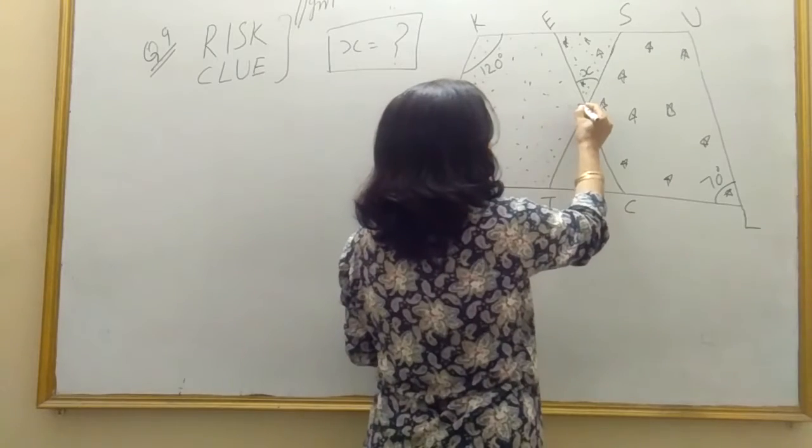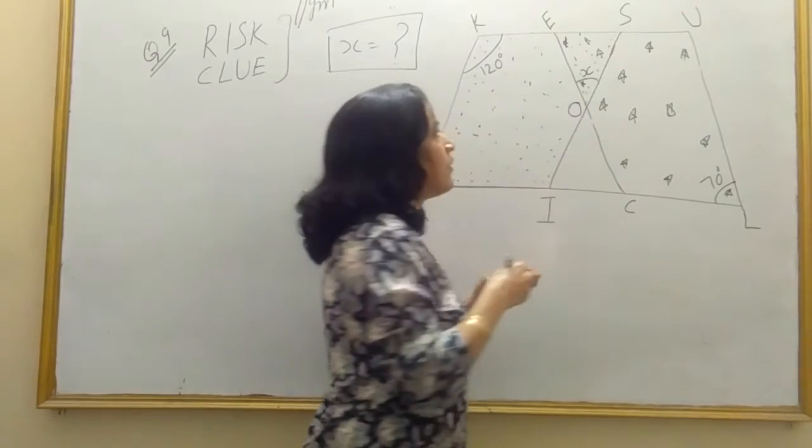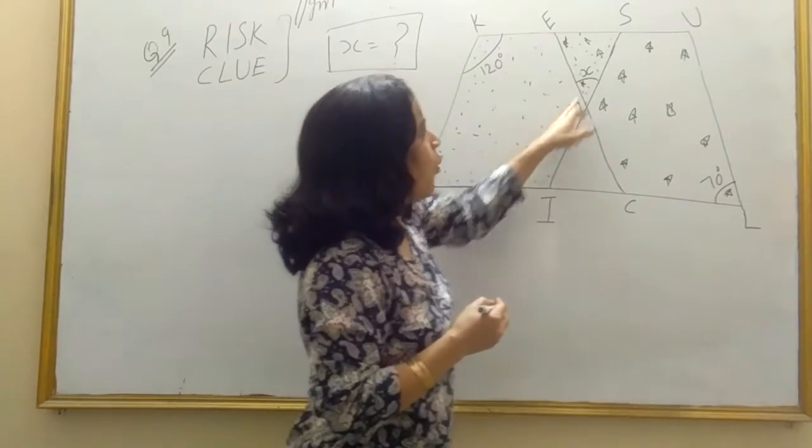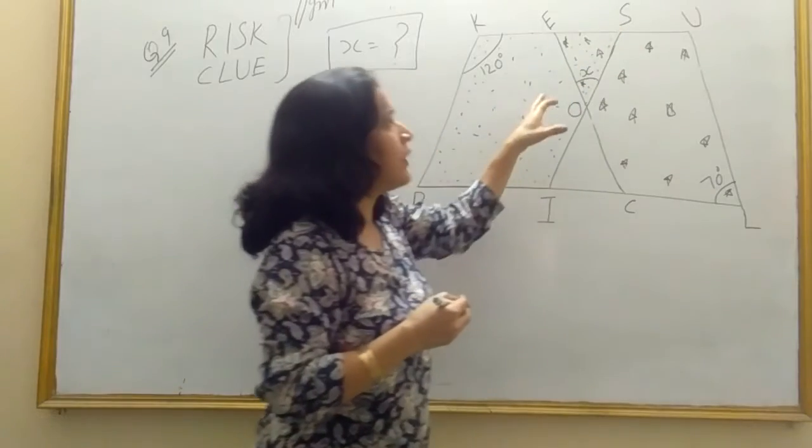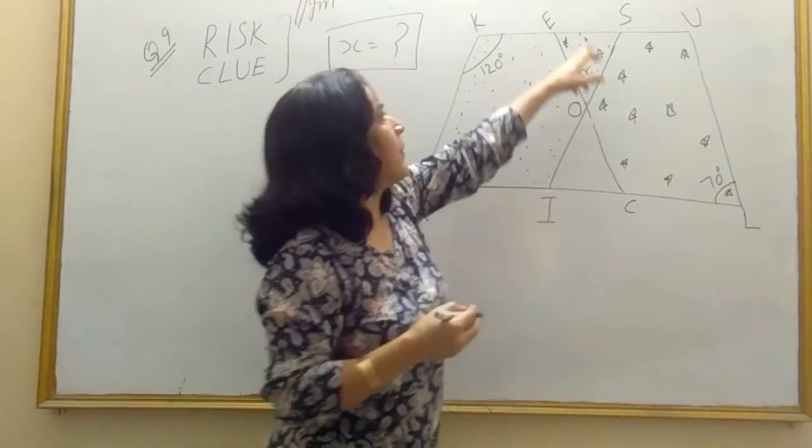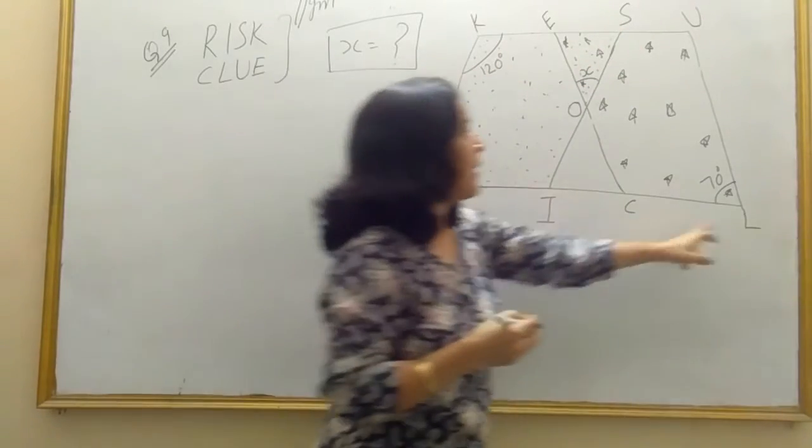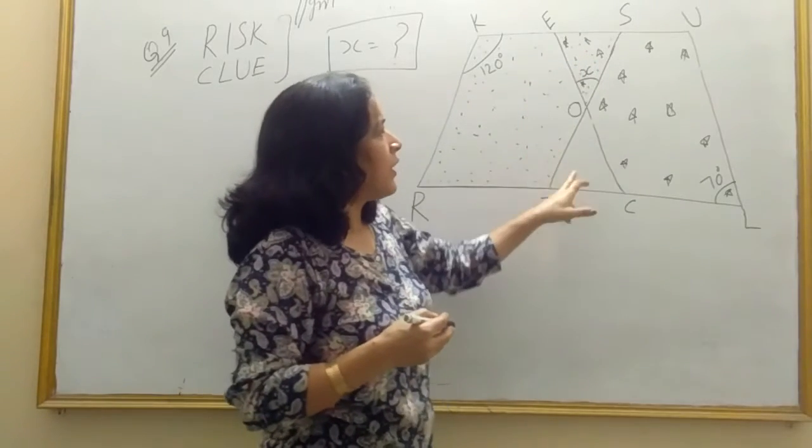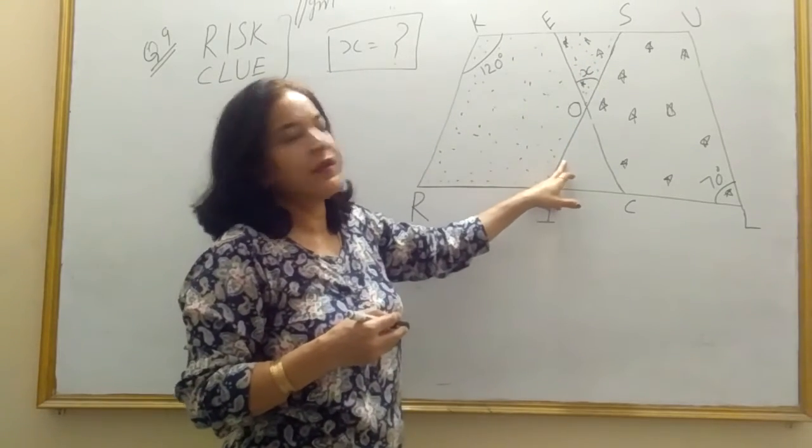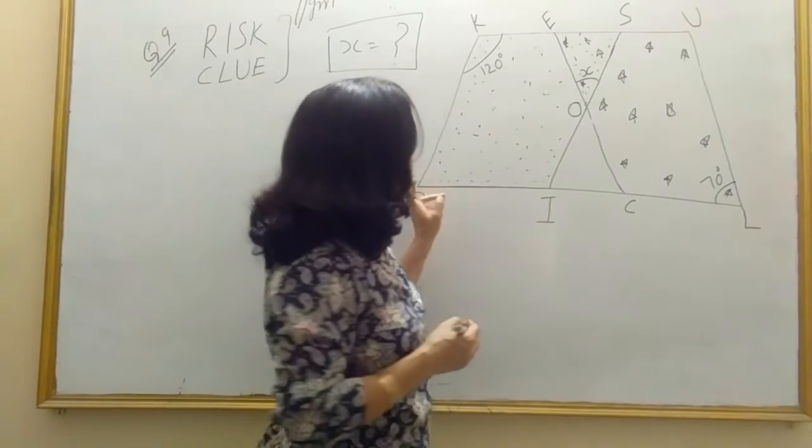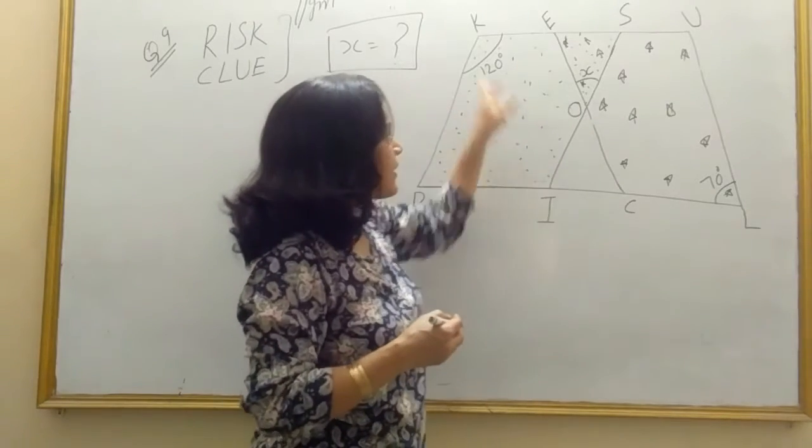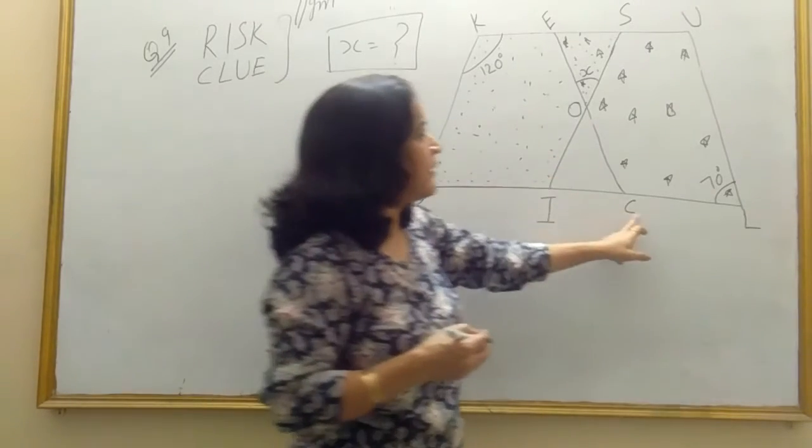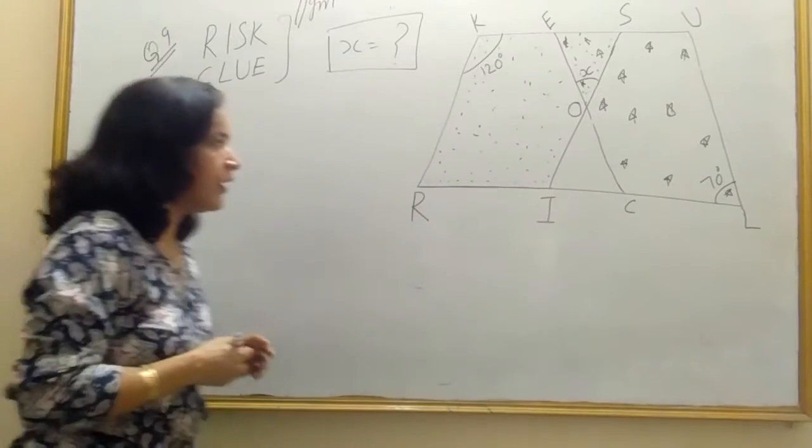Suppose I get this name O. This region A-O-S is common to both parallelograms. Parallelogram risk and parallelogram clue. This region is common to both. And this blank region, neither R-I-S-K is including this region or neither C-L-U is including this region. Clear?